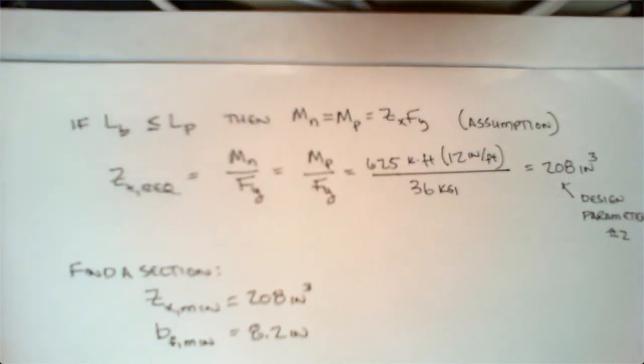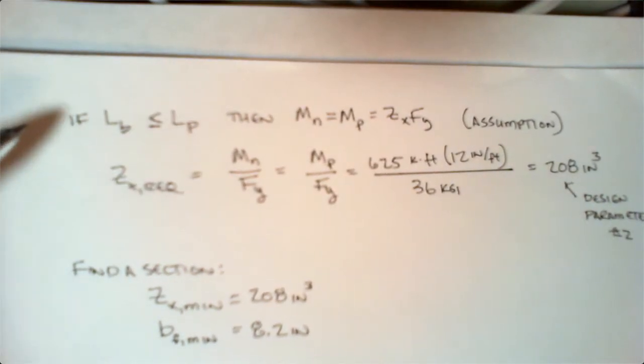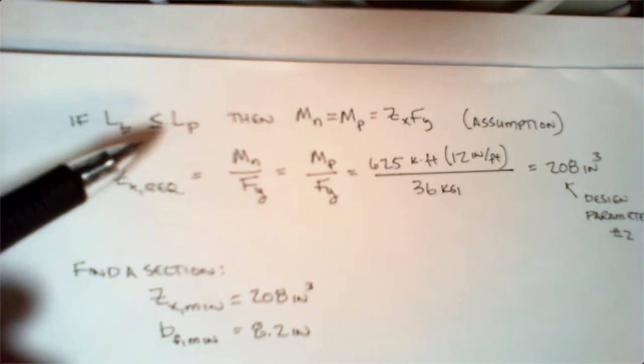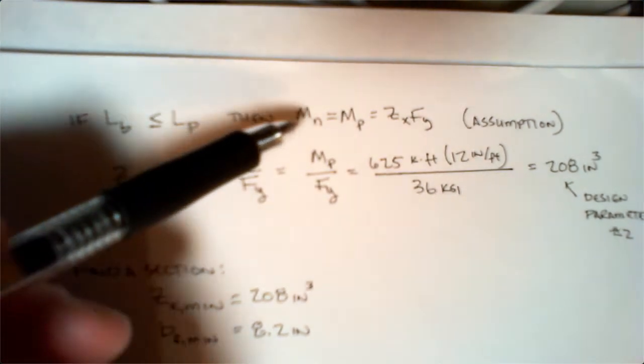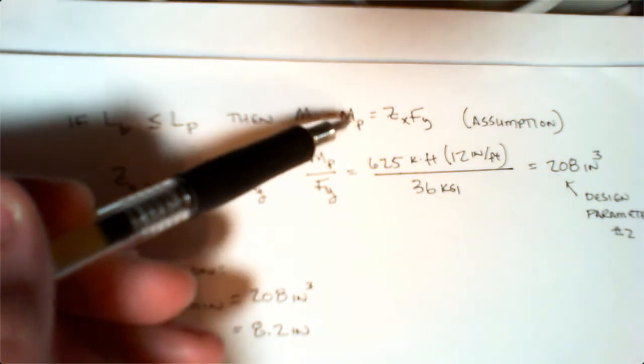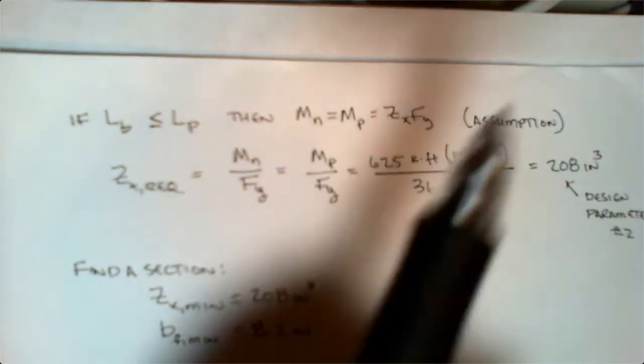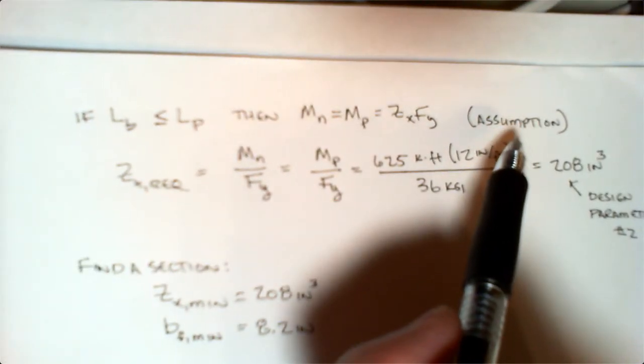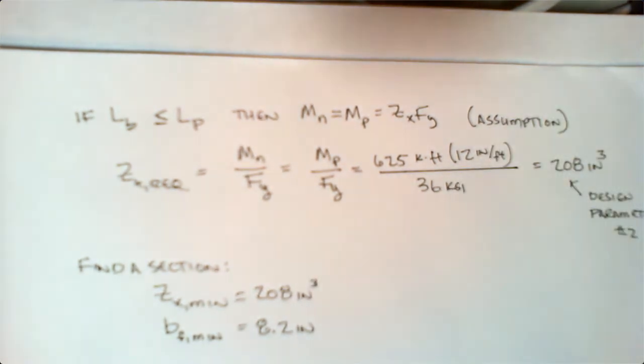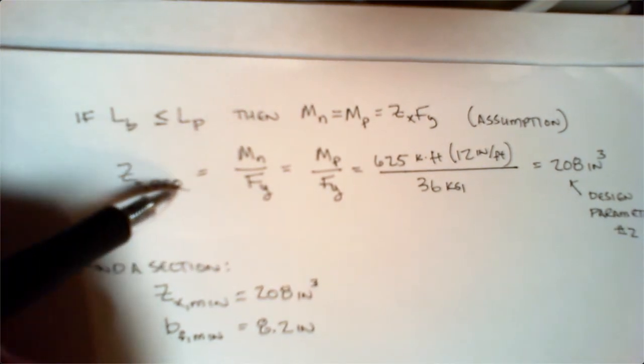If we assume zone one, then Lb has to be less than Lp, which means the nominal moment is equal to the plastic moment, which is equal to Zx times Fy. Again, this is an assumption, so we're going to assume it for now and verify it at the very end.